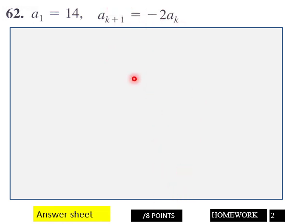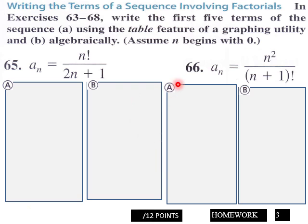Page three: write the first five terms of these sequences. Part (a) using the table feature of a graphing calculator, and part (b) algebraically. Write the first five terms for each one of these sequences. Fill in your B response box with your first five terms of the sequence. You got twelve points for page three.